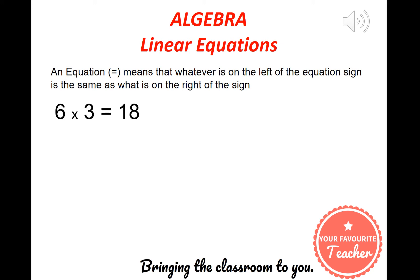So we can always write 6 times 3 is equal to 18. Or we could write 6 times 4, which is 24, is equal to 21 plus 3, which is also 24. So we can put in our equation sign and we know that's correct.